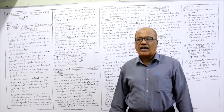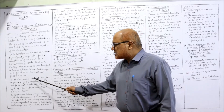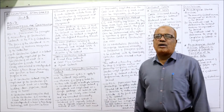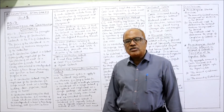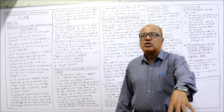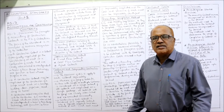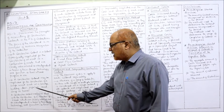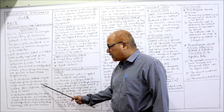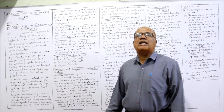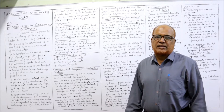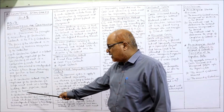A construction contract may be negotiated for a single asset. Examples of single asset contracts include construction of a bridge, building, dam, pipeline, road, ship, or tunnel.